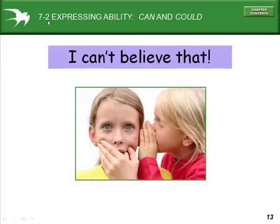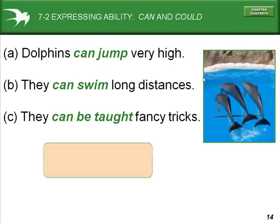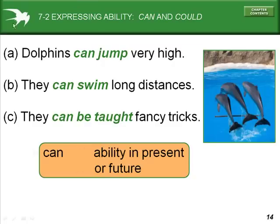Section 7-2: expressing ability using can and could. Dolphins can jump very high. They can swim long distances. They can be taught fancy tricks. Can is used to show ability in the present or in the future.